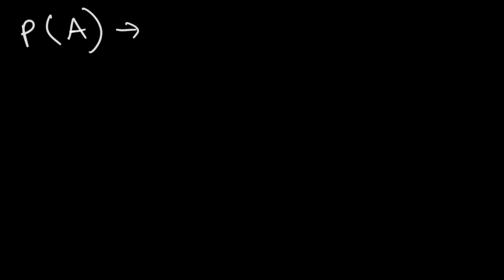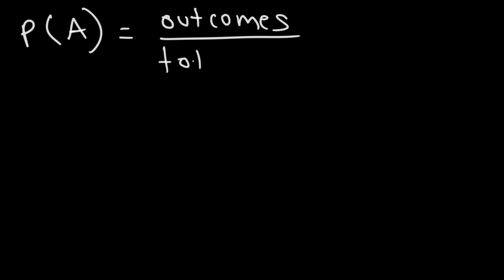In this lesson, we're going to talk about probability. So what is probability? For example, perhaps you've seen something like this: P of A. What does that mean? This is the probability of event A occurring. To calculate the probability of an event occurring, it's equal to the number of favorable outcomes — outcomes that lead to event A — divided by the total possible number of outcomes.